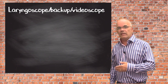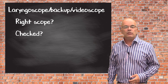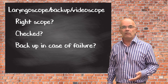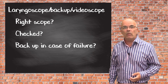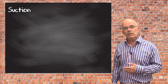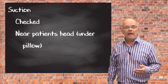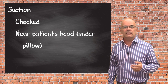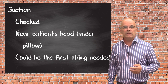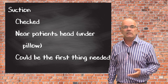Laryngoscope, backup scope, video laryngoscope: have you got the right laryngoscope? Does it work? Has anyone checked it? Do you have a backup in case your first one fails? Many units now have video laryngoscopy — ensure it is easily available, you know how to operate it, it is clean and working. Plug it in. Suction must be near the patient's head — checked, connected, and working. Many practitioners tuck it under the pillow, readily accessible, as it may be the first thing needed to ensure a clear view of the airway and minimise aspiration.